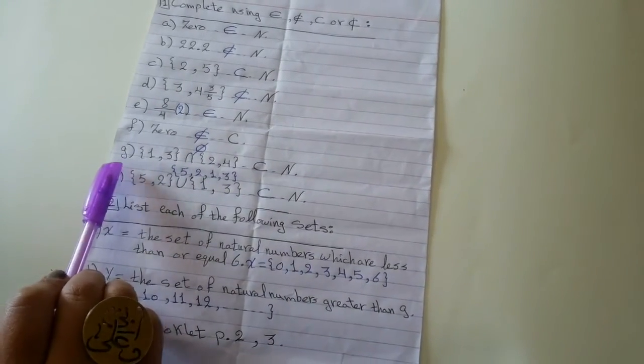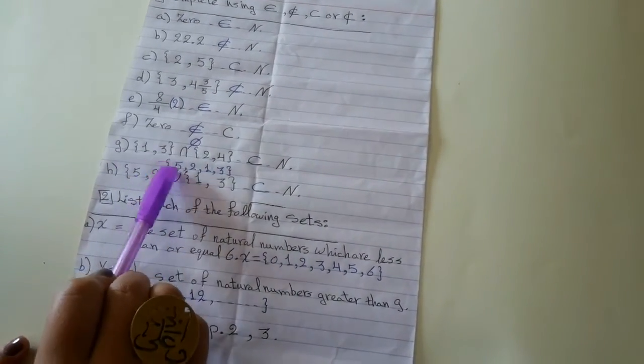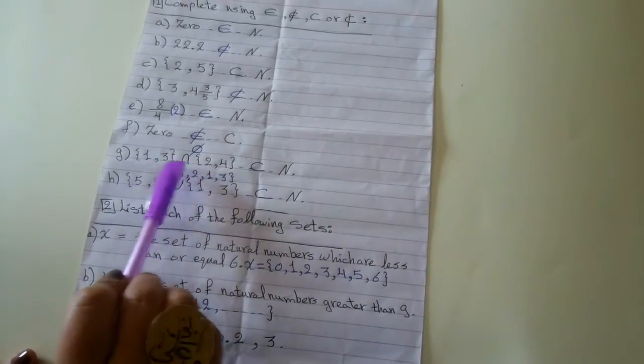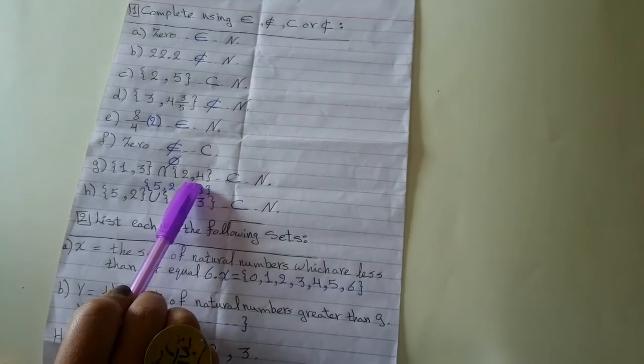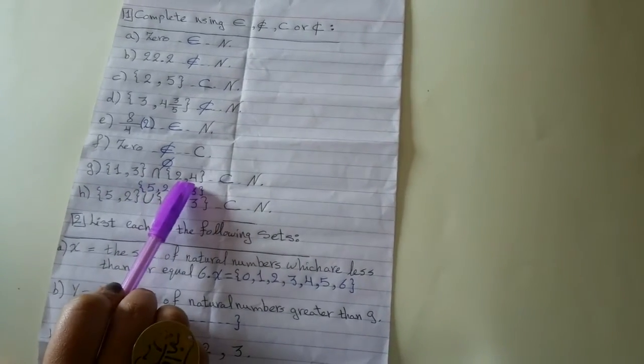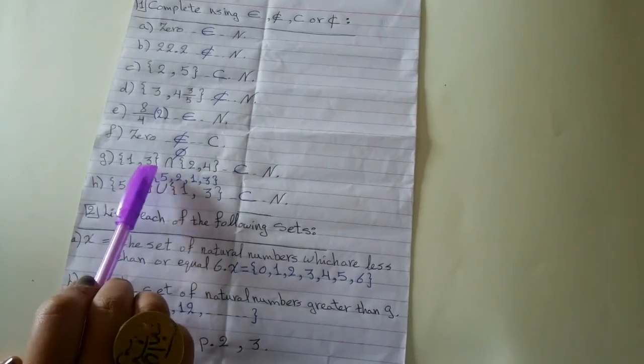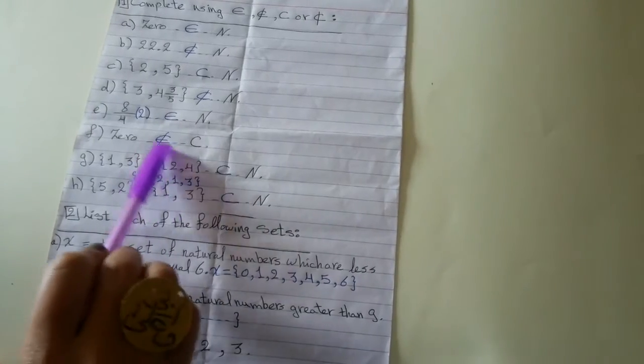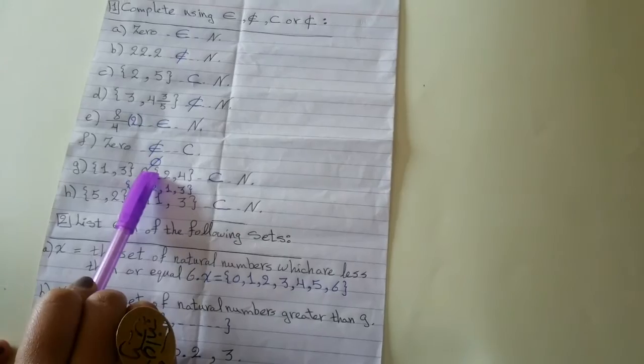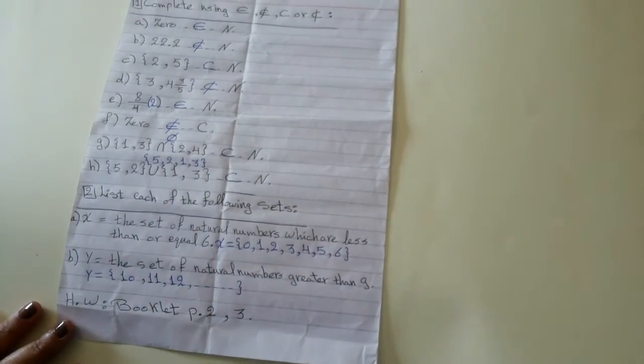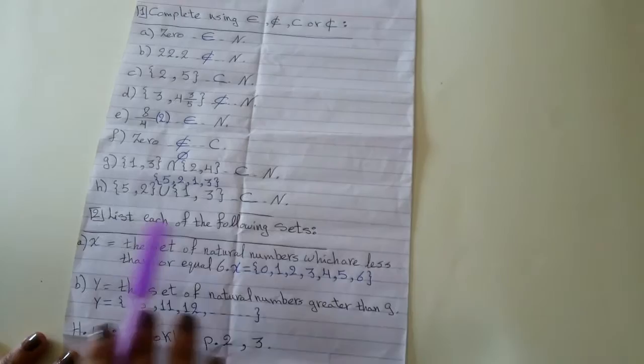Number G, 1 and 3, intersection 2 and 4. Intersection means what is the common between the two sets. We don't have anything common. So, 1 and 3, intersection 2 and 4 equals Phi. As we know from the first term, Phi is subset of any set. So, Phi subset of N.